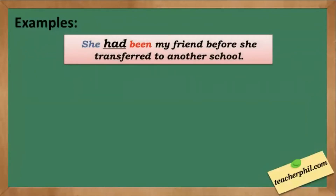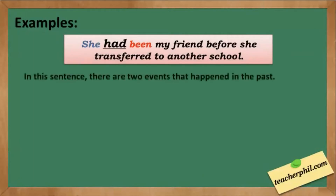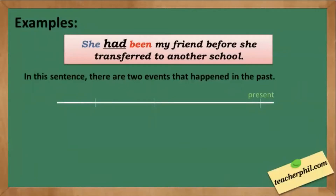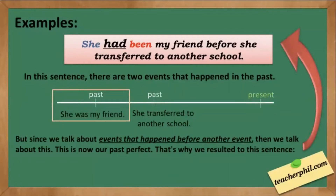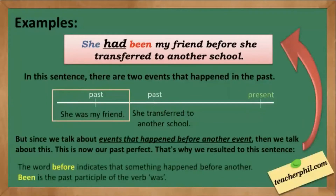She had been my friend before she transferred to another school. In this sentence there are two events that have happened in the past. The first past event is 'she was my friend,' and the second one is 'she transferred to another school.' Since we talk about the event that happened before another event, we use past perfect: 'She had been my friend before she transferred to another school.' The word 'before' indicates that something happened before another.